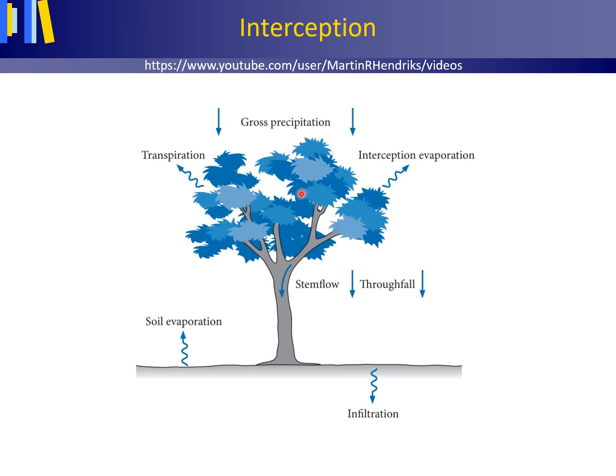Precipitation that is intercepted by vegetation or buildings may evaporate back into the atmosphere. This process is called interception evaporation.